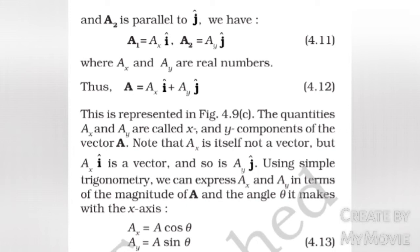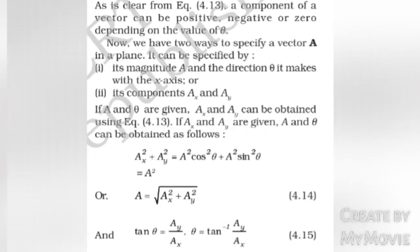Using simple trigonometry, we can express AX and AY in terms of the magnitude of vector A and the angle theta it makes with the x-axis: AX equals A cos theta, AY equals A sin theta. As is clear from equation 4.13, a component of a vector can be positive, negative or zero depending on the value of theta.